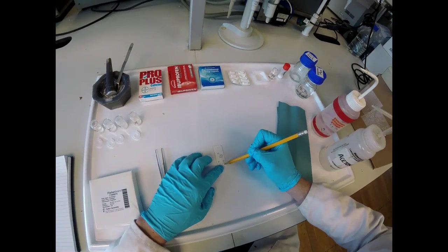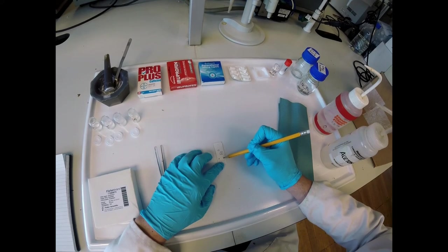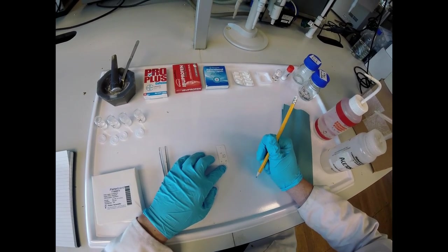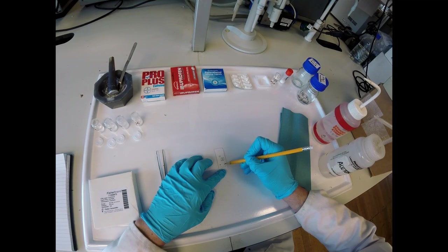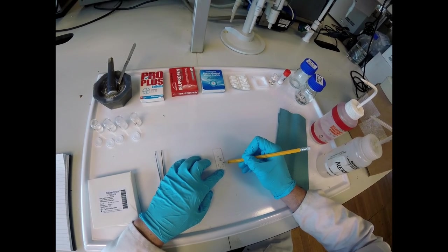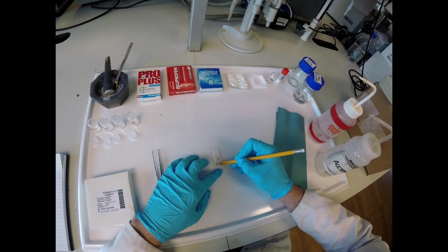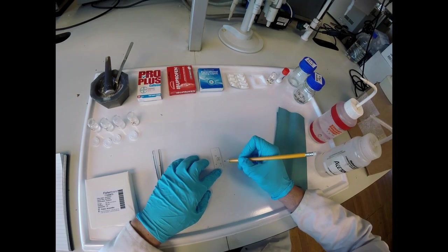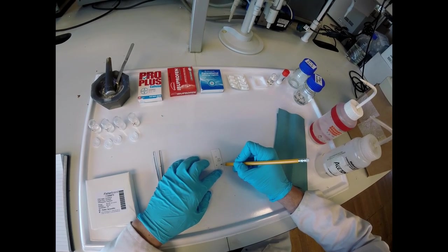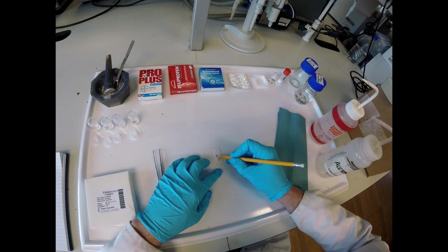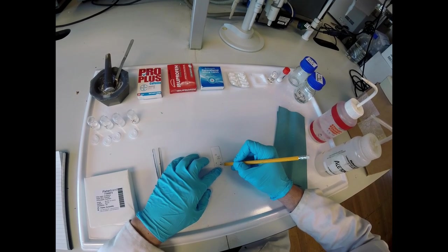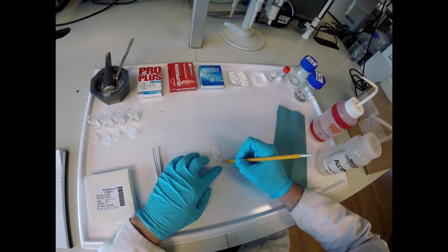If we look in the column for our unknown, we can see that it's got two spots showing us that there's two components in there. If we compare the height that those spots are at to the height of the spots from the other components, we can see that our cold and flu remedy contains caffeine, not ibuprofen, but it does contain paracetamol.